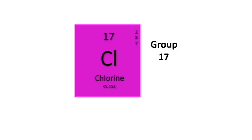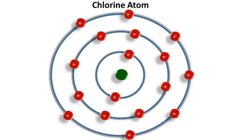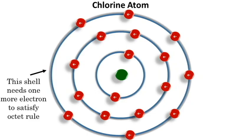Now let's look at chlorine. Chlorine is in group 17, which indicates it has 7 valence electrons. Looking at the chlorine atom, notice how the outermost shell needs one more electron to satisfy the octet rule and have 8 electrons to be stable.